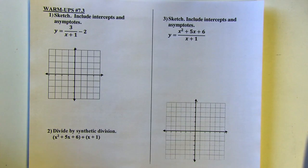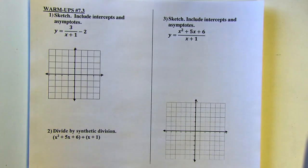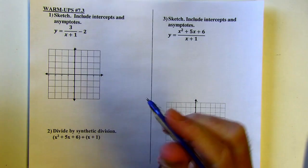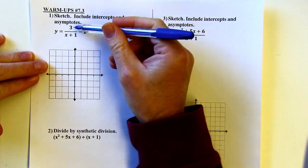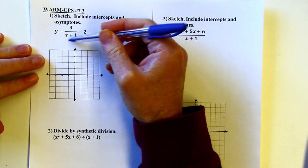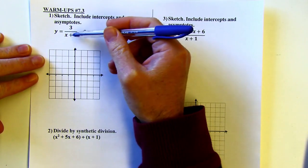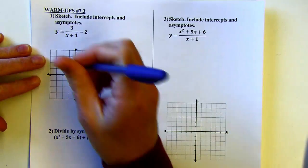Here's warm-up number 7.3. I'm going to sketch this equation. This is one of the problems that I like to call crosshair problems, because I've got a number as my numerator — a constant — and on the bottom I have x plus or minus something, or it could be 2x plus or minus something.